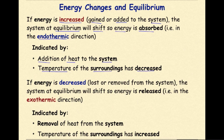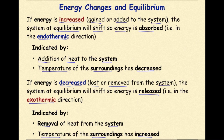At the same time, if energy is decreasing in the system — in other words lost or removed from the system — the system at equilibrium will shift so energy is released, in other words in the exothermic direction. This is indicated by the removal of heat from the system and more noticeably the temperature of the surroundings has increased. So if we see an increase in the temperature in the surroundings, we know that it's an exothermic reaction and energy has been lost or removed from the system.